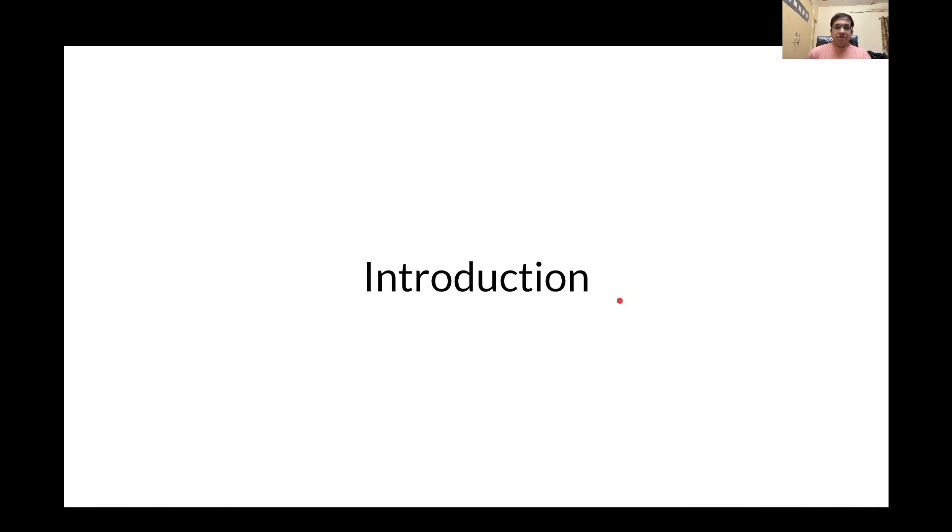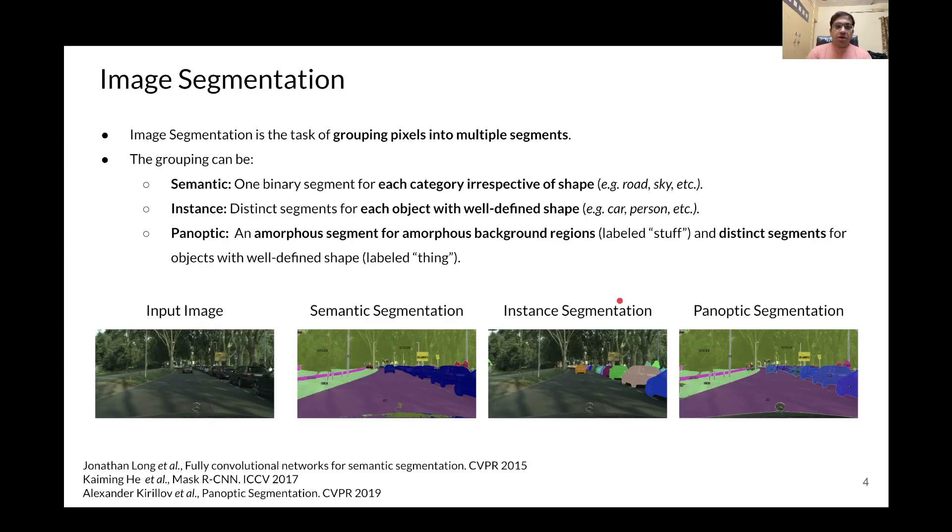Now to give you a brief introduction about the image segmentation task, it involves grouping pixels into multiple segments. The grouping can be semantic, where we try to segment out one binary segment for each category, irrespective of the shape of the object.